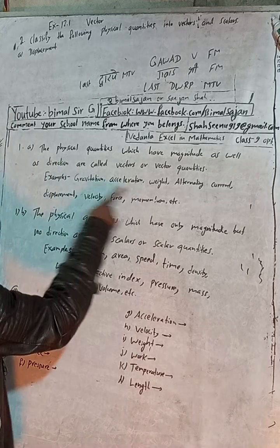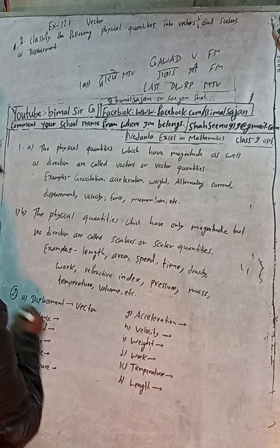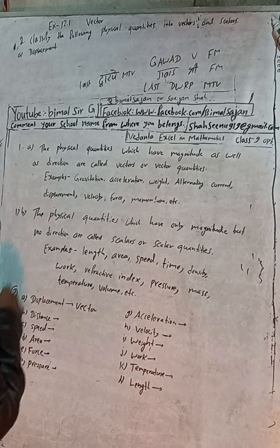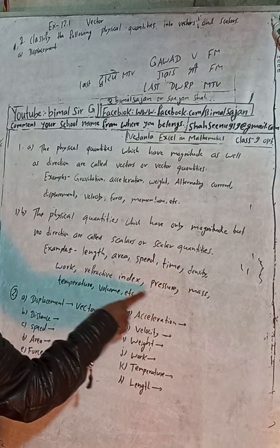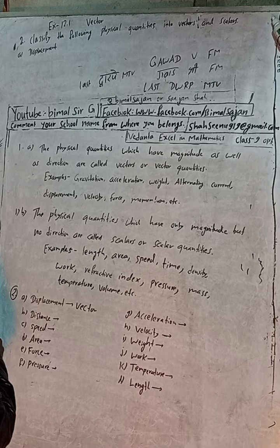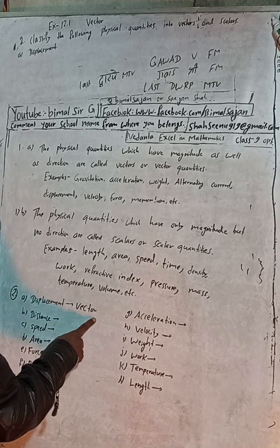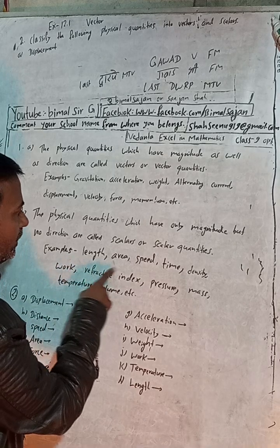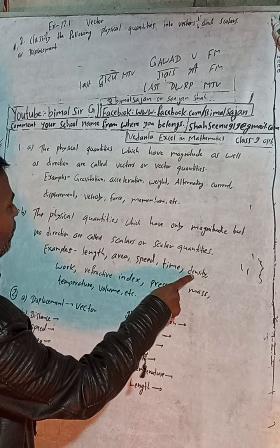Displacement is a vector. For example, displacement is a vector quantity. Distance, on the other hand — velocity, mass, temperature — and displacement is a vector over distance, which is a scalar. Length, area, density are scalar quantities.